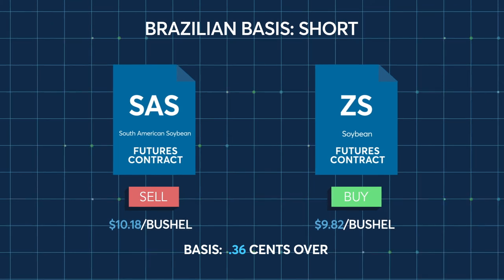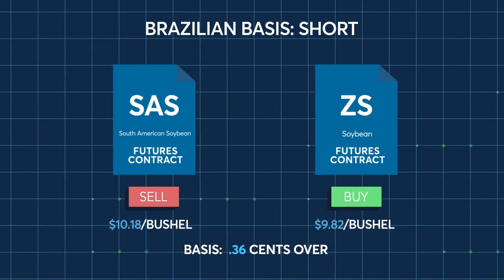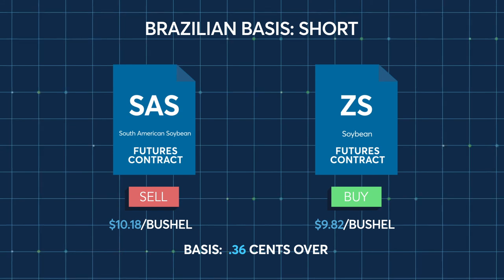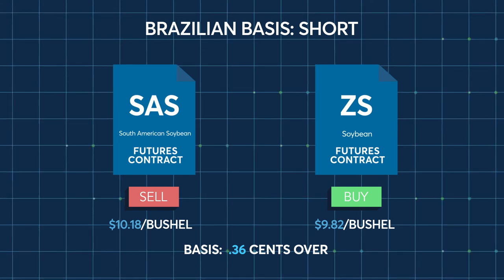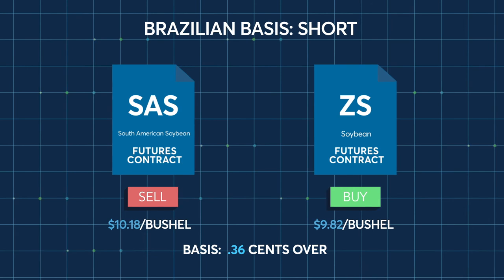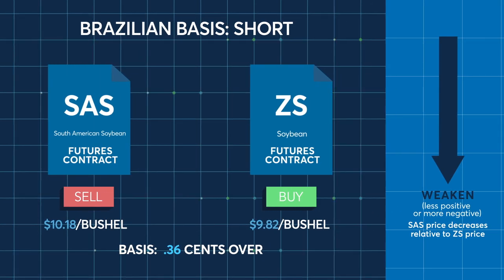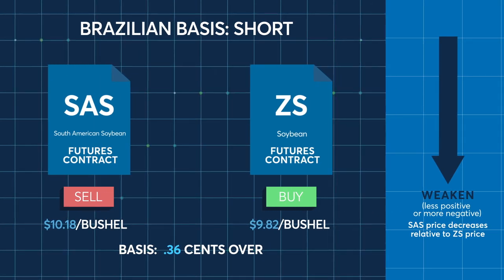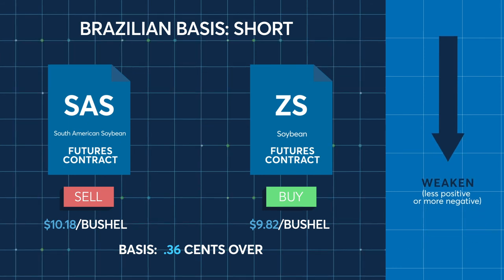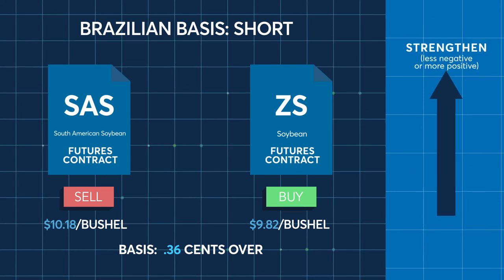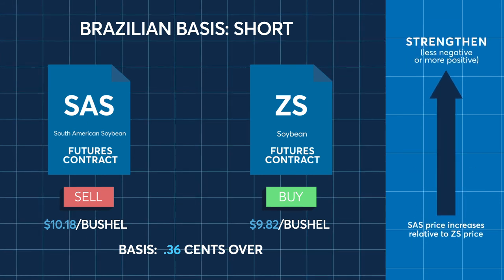Conversely, if a Brazilian exporter is concerned that the BASIS is going to decrease or weaken, they could sell South American soybean futures and buy U.S. soybean futures, creating a synthetically short BASIS position. If the spread weakens, their physical position would lose value, but would be offset with a gain in the spread. If the spread widened or strengthened, their physical position would gain in value, but that gain would be offset with a loss in the spread.